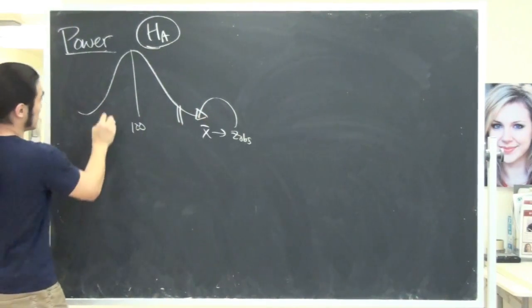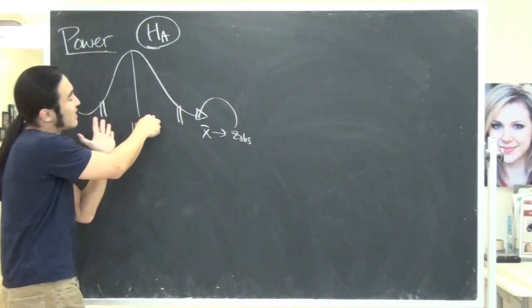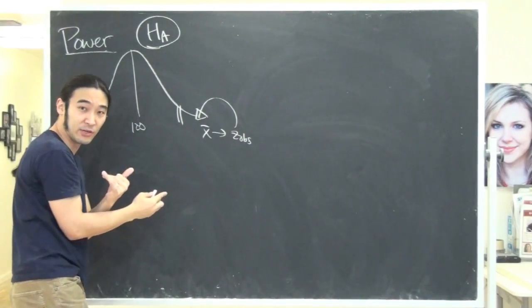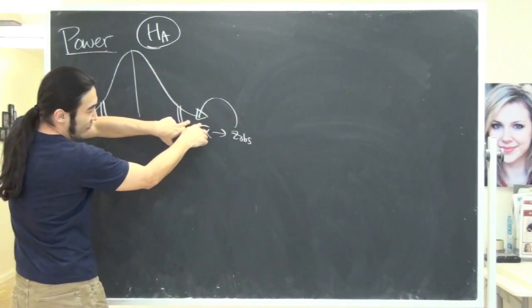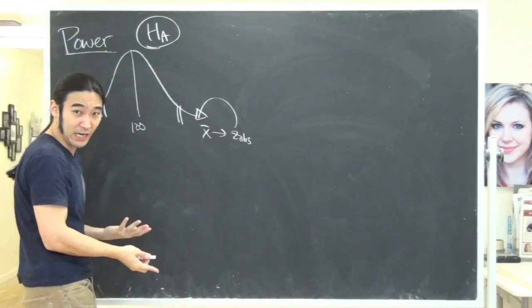Remember, if it lands here, so you set up your critical values. If it lands within them, that's not freakishly high or low, so you fail to reject. But what if you were freakishly high or freakishly low? And you would reject.